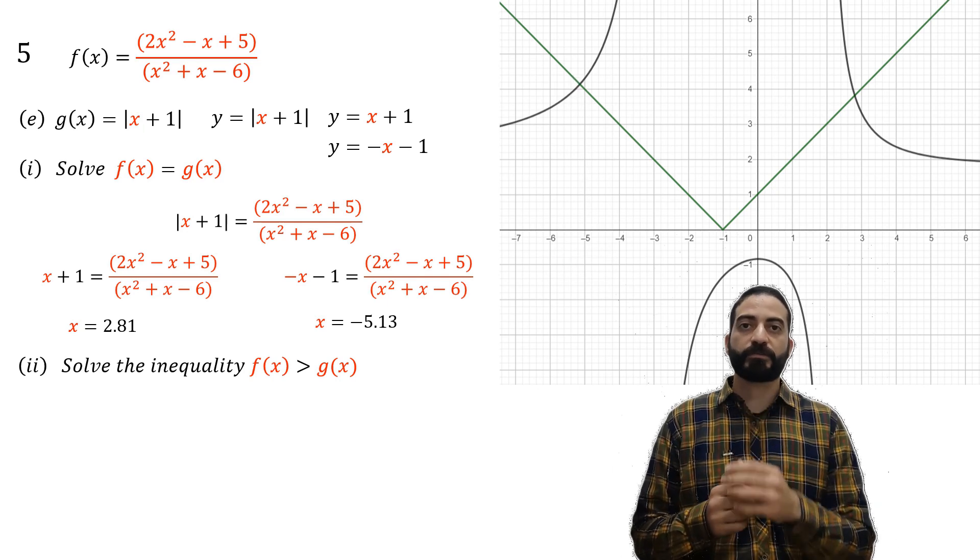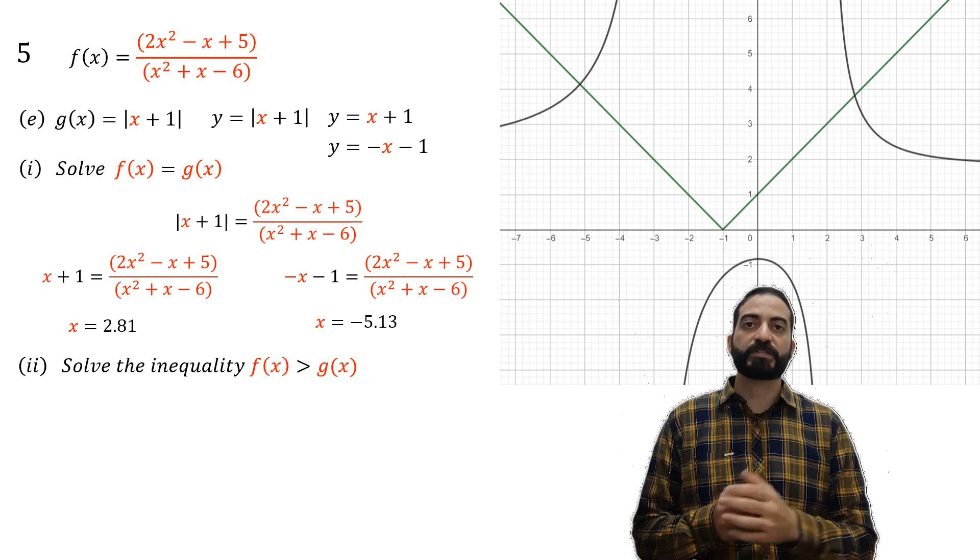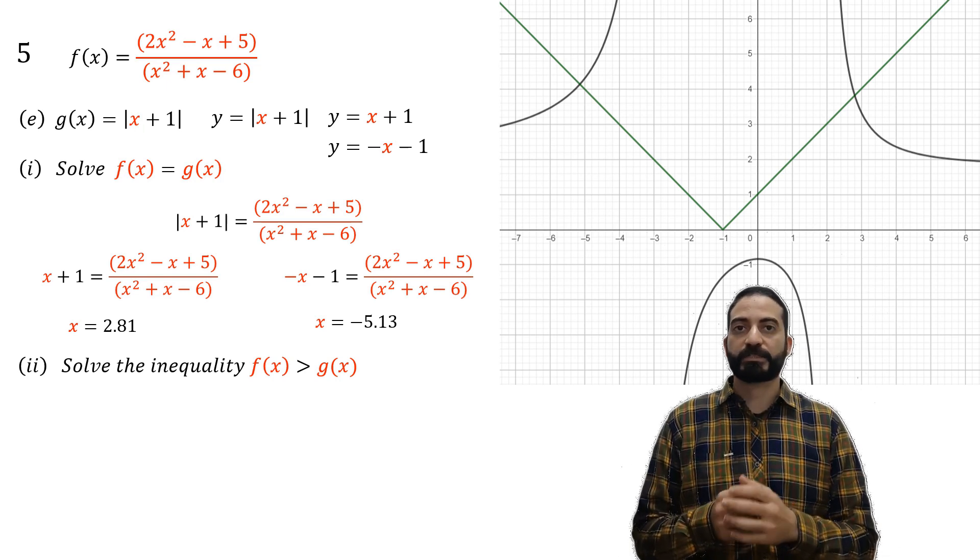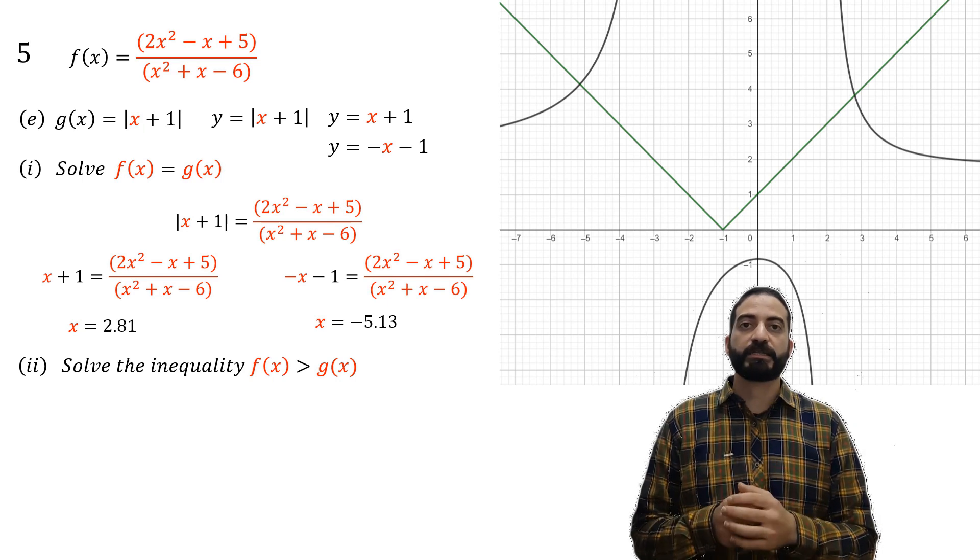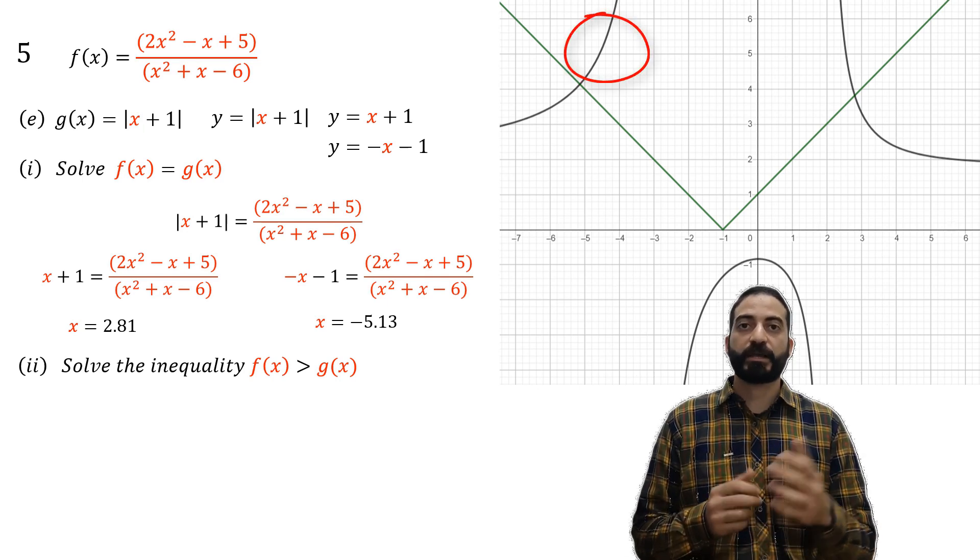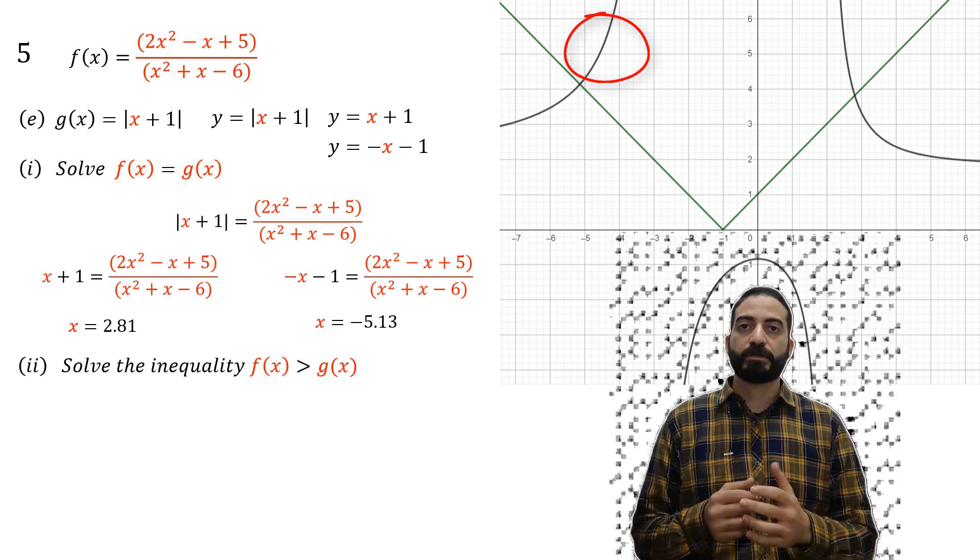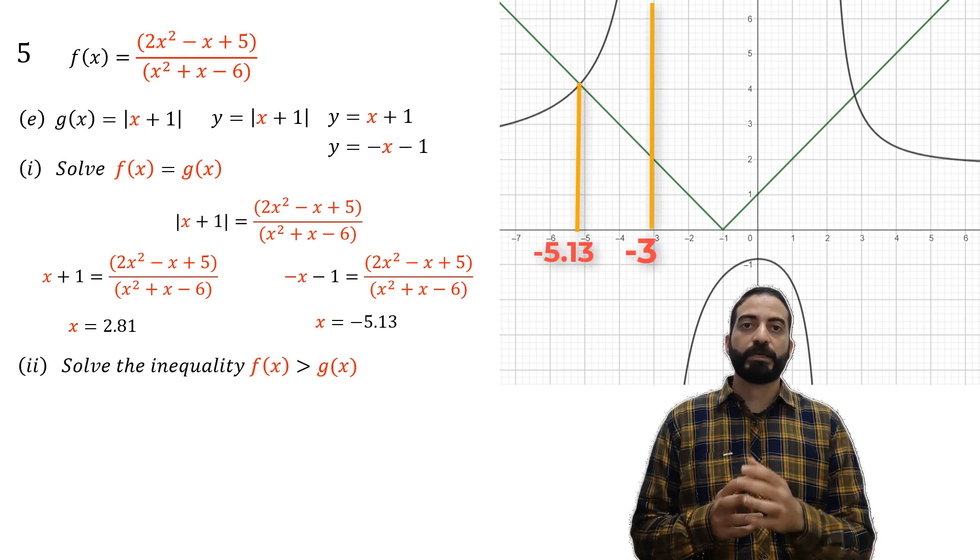We must search for x in such a way that f(x) is larger than g(x). As we see here, f(x) is above g(x), so x here is between -5.13 and -3.